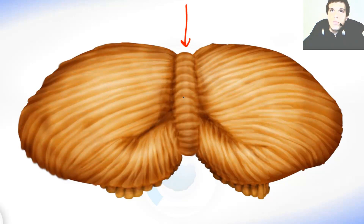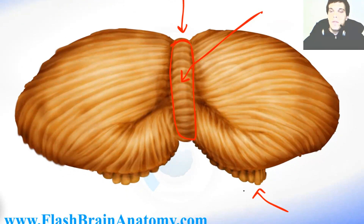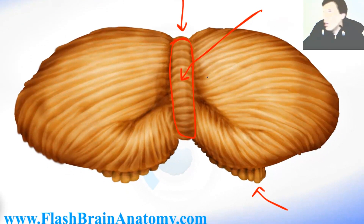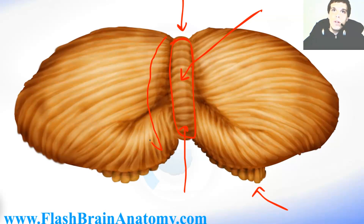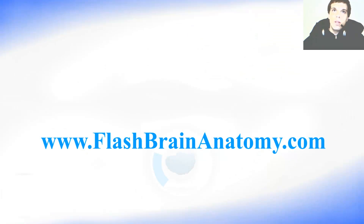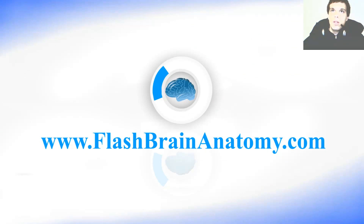Here is the pyramid of the vermis, and this whole thing is the vermis. This over here was the flocculus, and this part over here was the uvula. Those are the hemispheres of the cerebellum — they are lateral from the vermis.